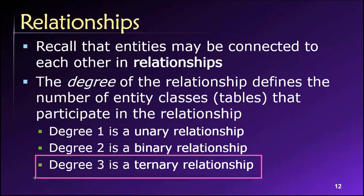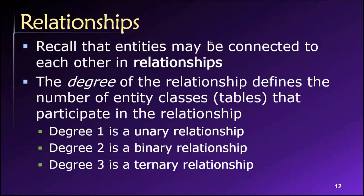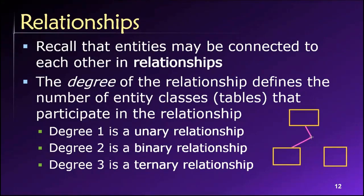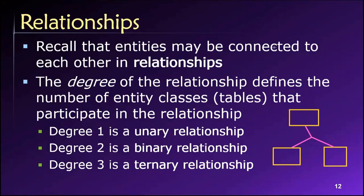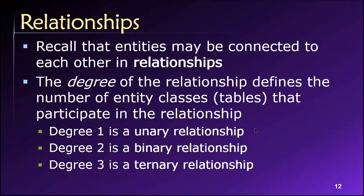We can also have ternary relationships. This is not something we can fully implement, but we do have a way of accounting for it. Imagine a design involving three tables with some kind of three-way connection between them — that is a ternary relationship. As we saw with associative entities, what we really need here is a fourth table in between to serve as glue connecting those three tables. Conceptually we can have a degree three or ternary relationship, or even degree four, but we cannot implement that in a real-world relational database management system. We'll need additional tables to support anything above a binary relationship.